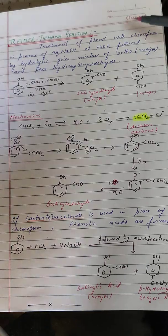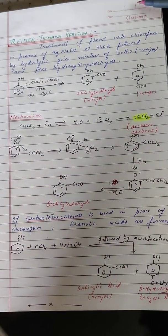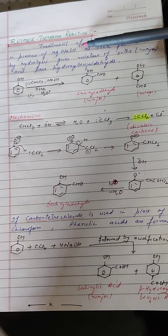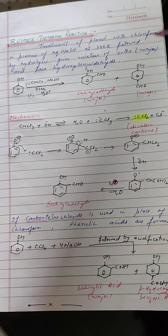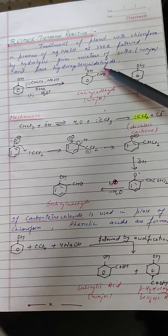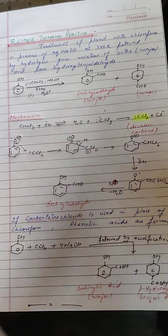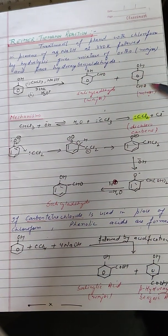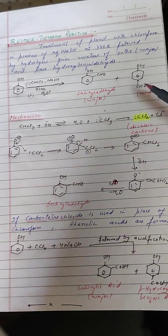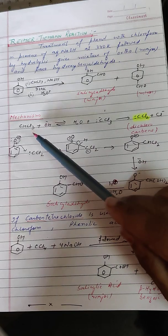The last reaction in this chapter is the well-known Reimer-Tiemann reaction. Treatment of phenol with chloroform in the presence of aqueous sodium hydroxide at 340 K, followed by hydrolysis, gives a mixture of ortho-hydroxybenzaldehyde (the major product) and para-hydroxybenzaldehyde, where the ortho isomer is formed in the major amount.